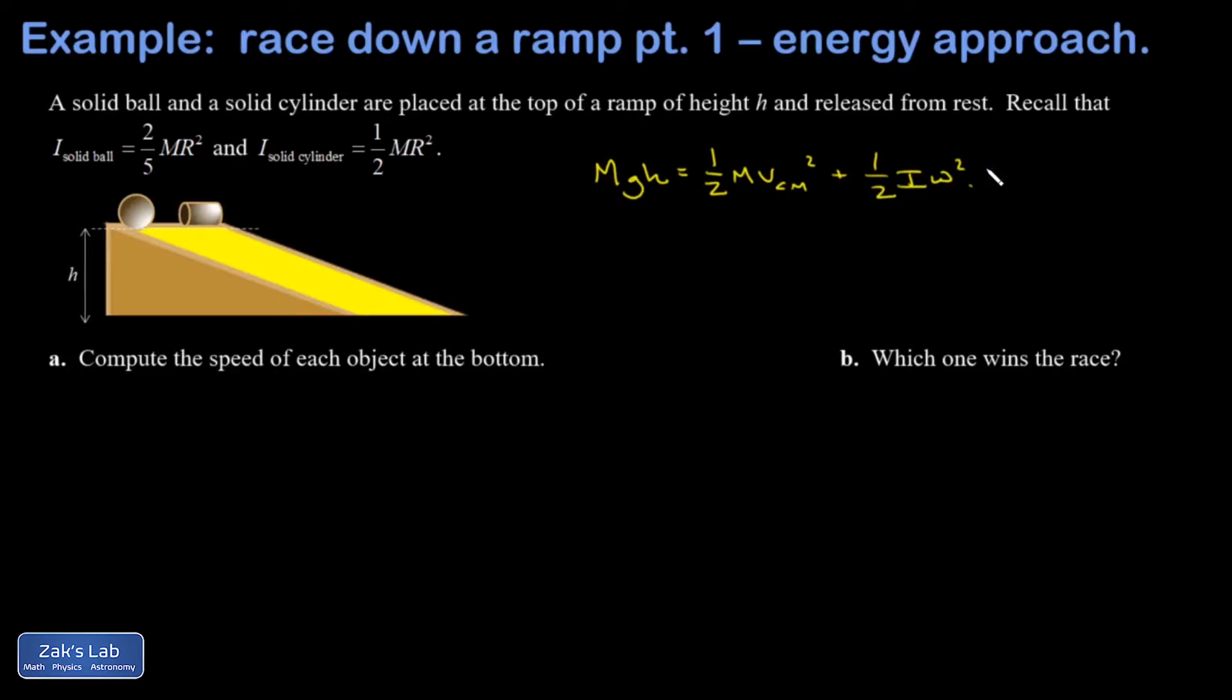I have to use my relationship for rolling without slipping. The center of mass velocity is R times omega. I'm going to use a capital R, and that means omega is V center of mass over R.